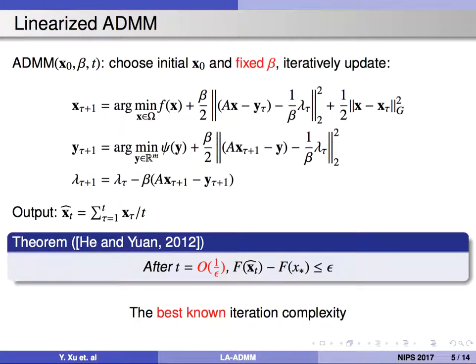This is a detailed updating of linearized ADMM. It can achieve an iteration complexity of 1 over epsilon. This is the best-known iteration complexity.